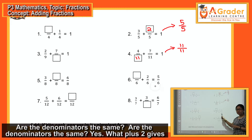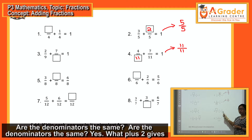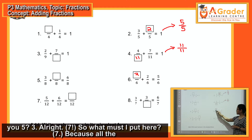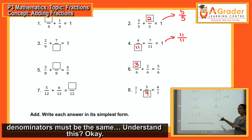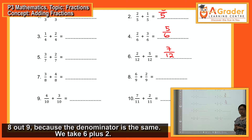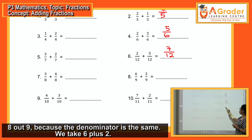Are the denominators the same? Yes — very simple. You add the numerators: 6 plus 2 gives you 8 out of 9. Because the denominator is 9 for all, and 6 plus 2 equals 8, the answer is 8 out of 9.